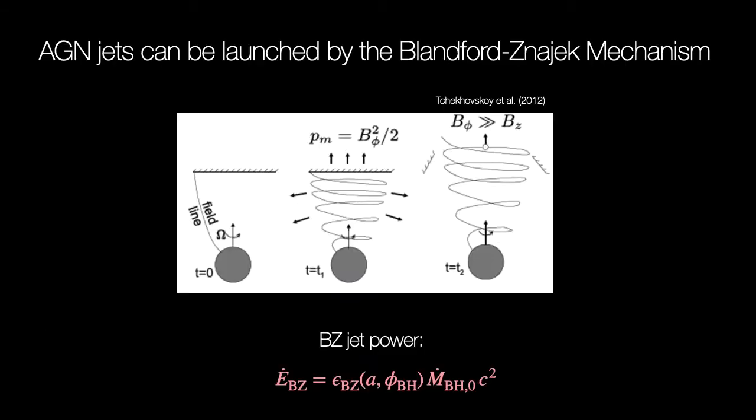Looking specifically at the launching mechanism, many of these GRMHD simulations indicate that the Blandford-Znajek process is likely to be at play. Here a net poloidal magnetic field is advected onto a spinning black hole by the accretion flow. General relativistic frame dragging effects within the ergosphere lead to the development of a toroidal field and the magnetic pressure in this configuration then launches the jet.